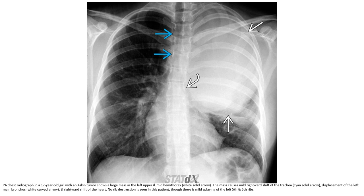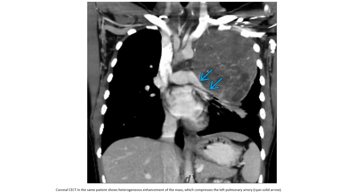This is the chest radiograph of a seven-year-old girl with an Askin tumor. There is a large mass in the left upper hemithorax. The mass displaces the trachea rightward, displaces the left main bronchus, and shifts the heart rightward. There is mass remodeling of the left fifth and sixth ribs. Contrast-enhanced CT of the same patient shows heterogeneous enhancement of the mass, which compresses the left pulmonary artery.